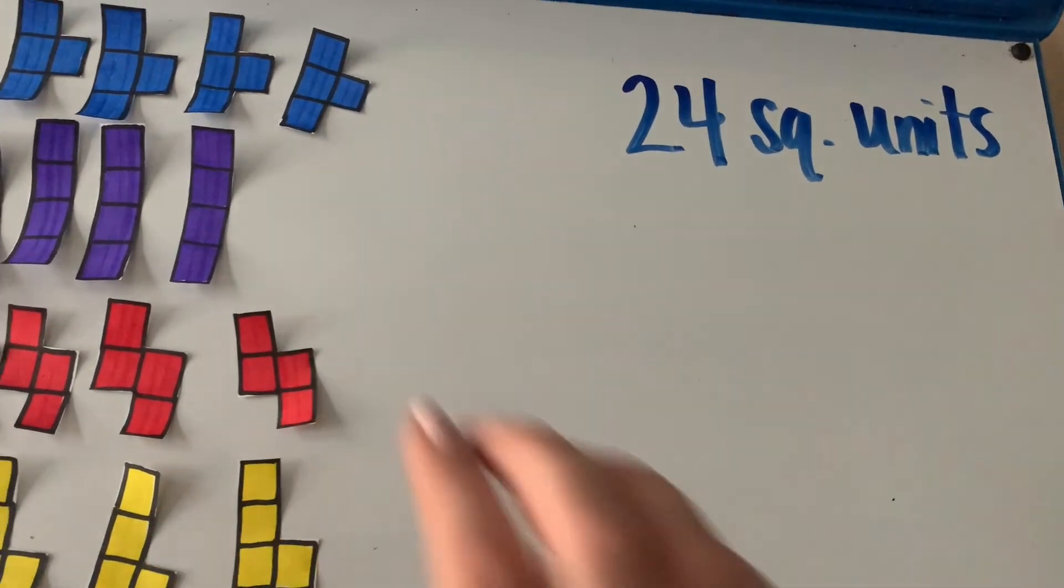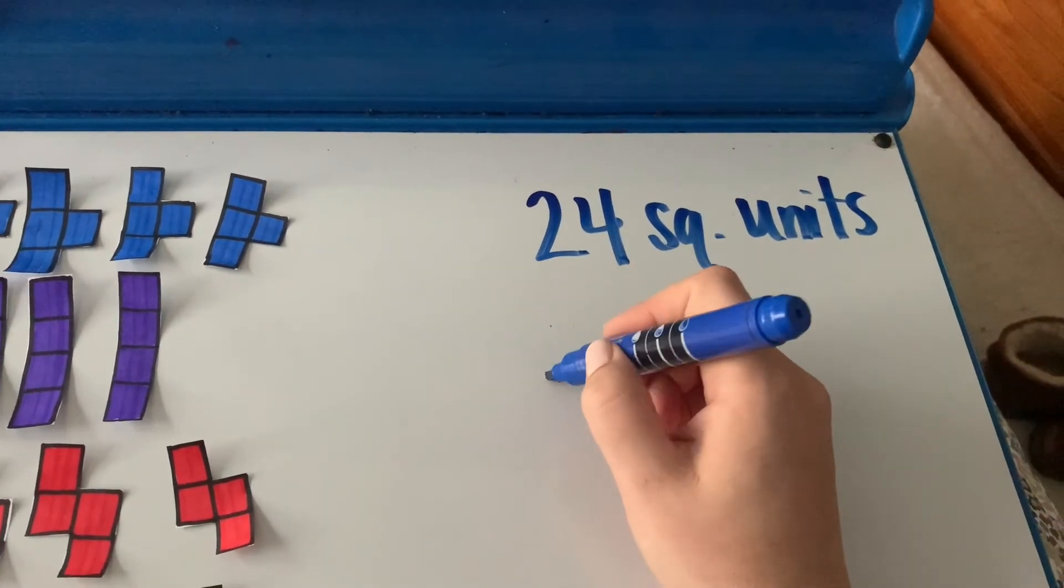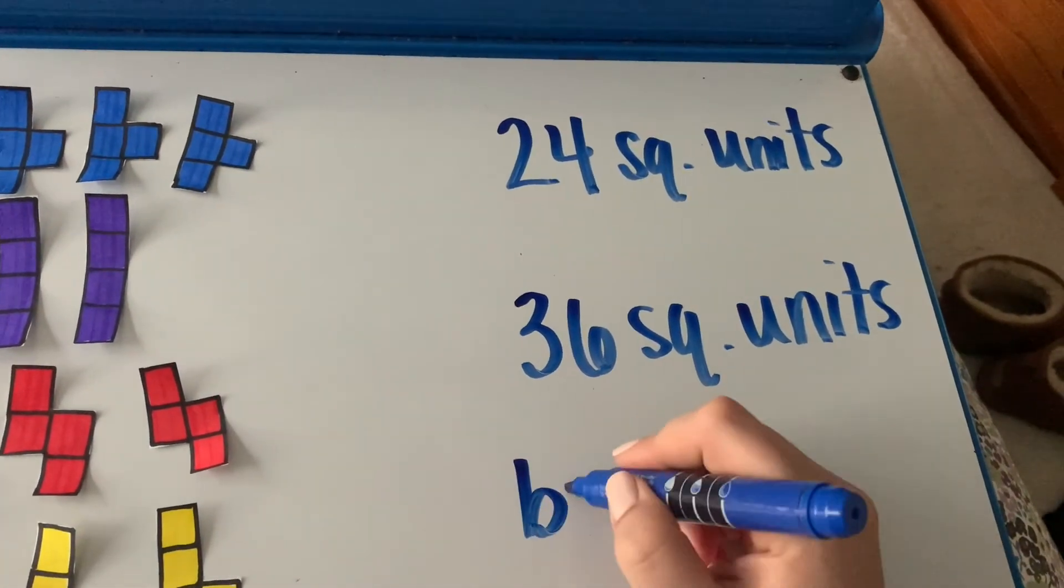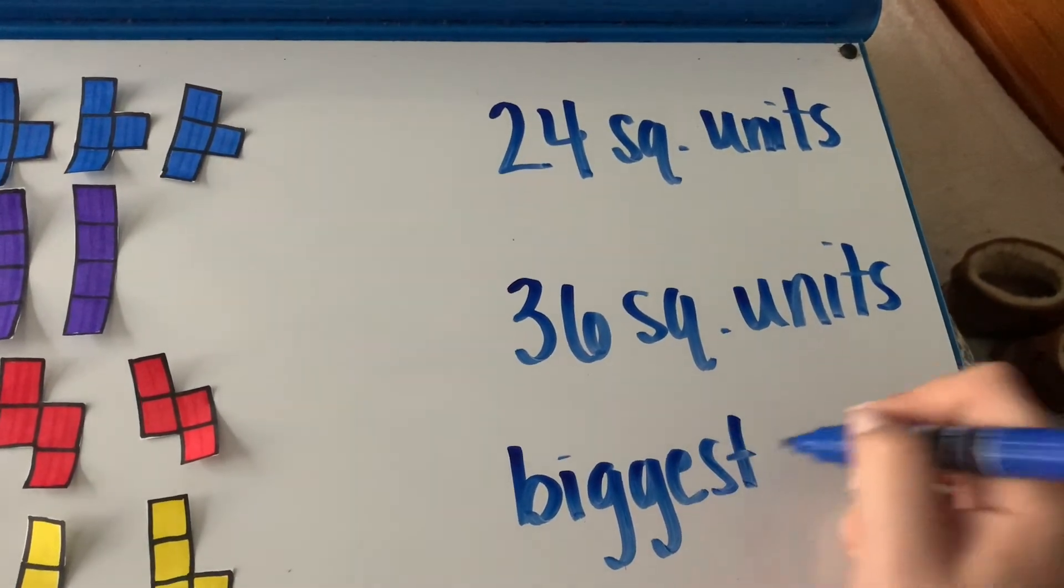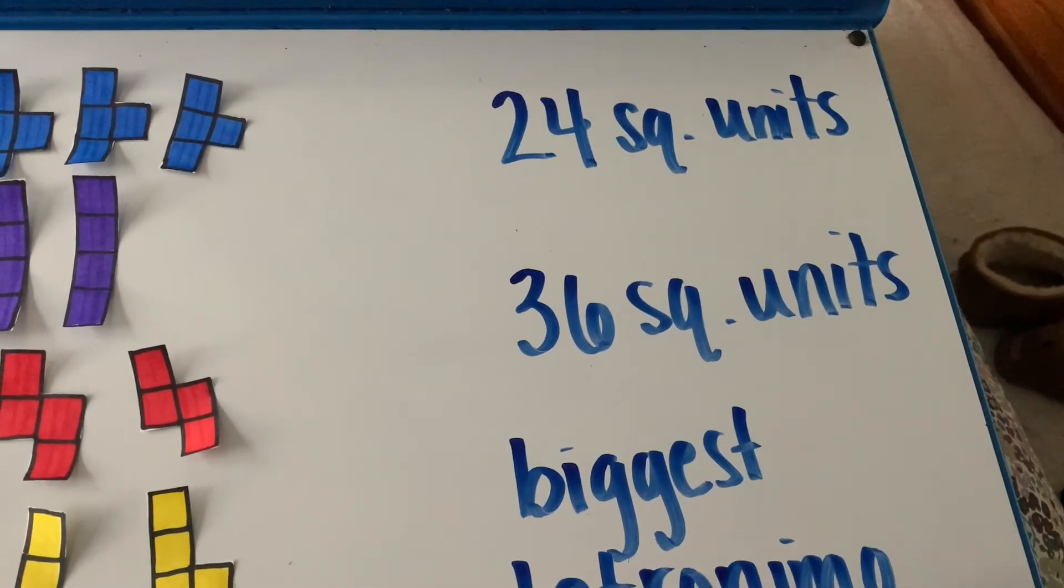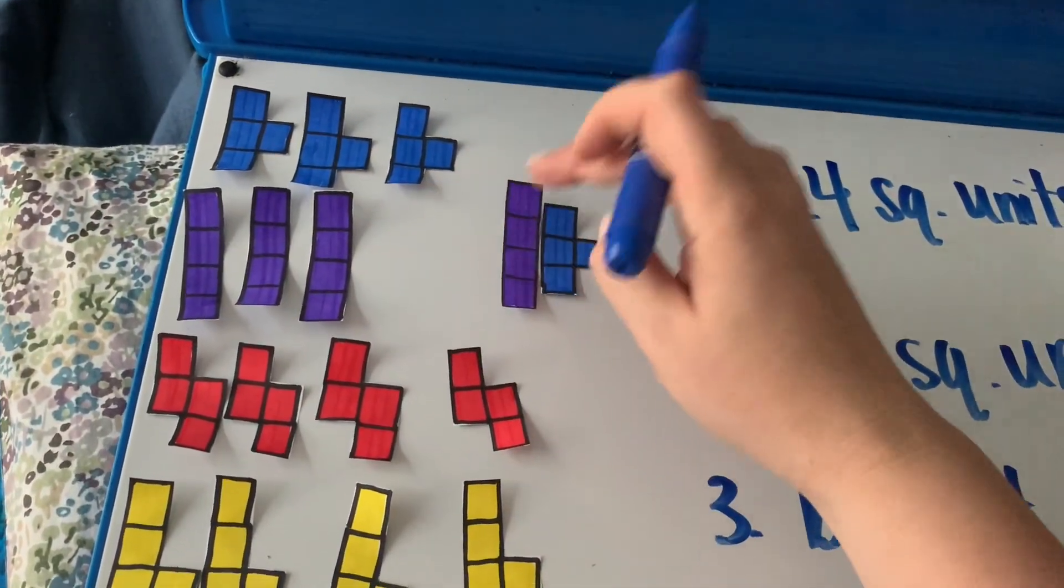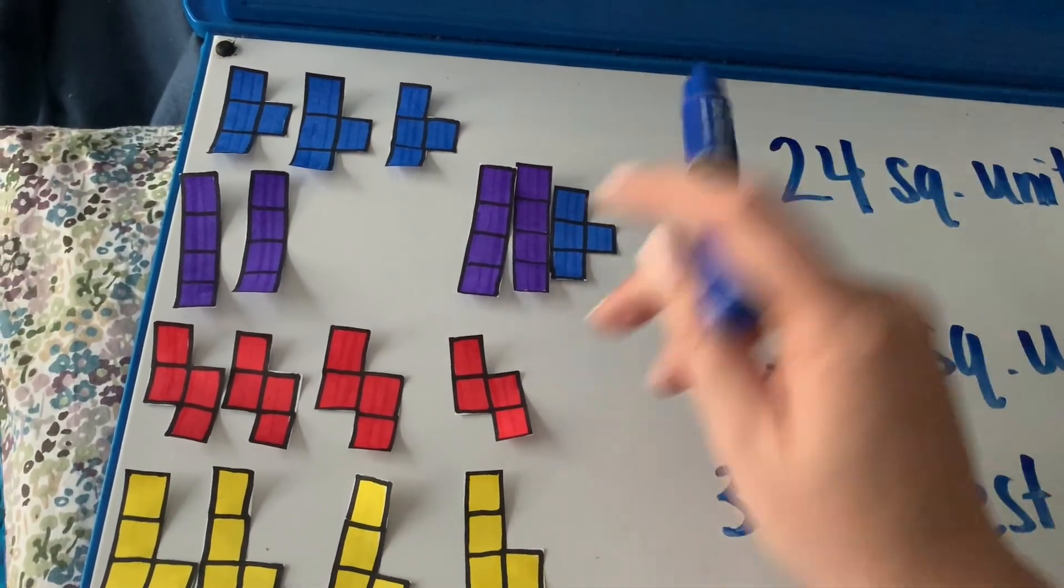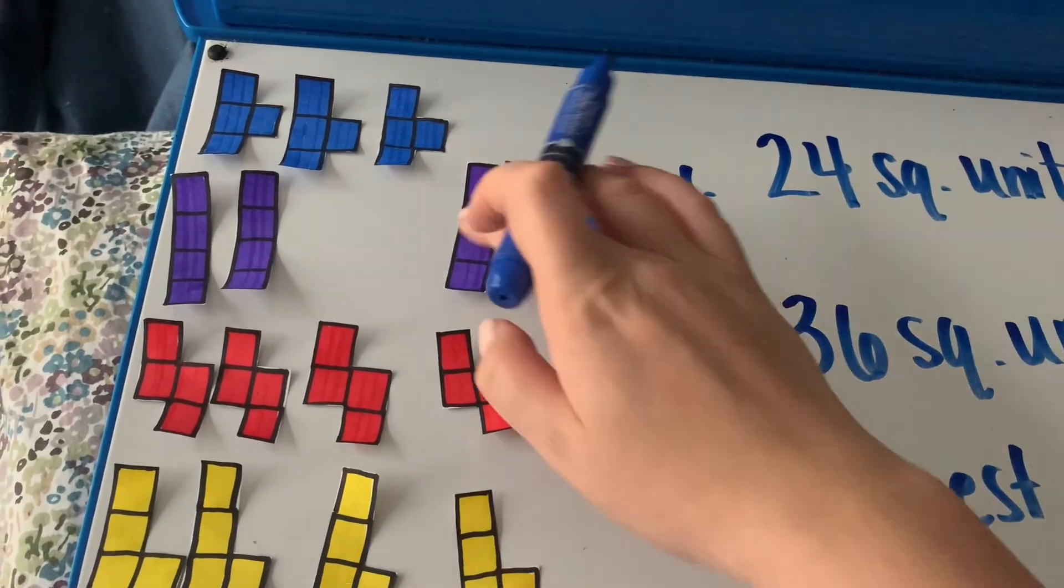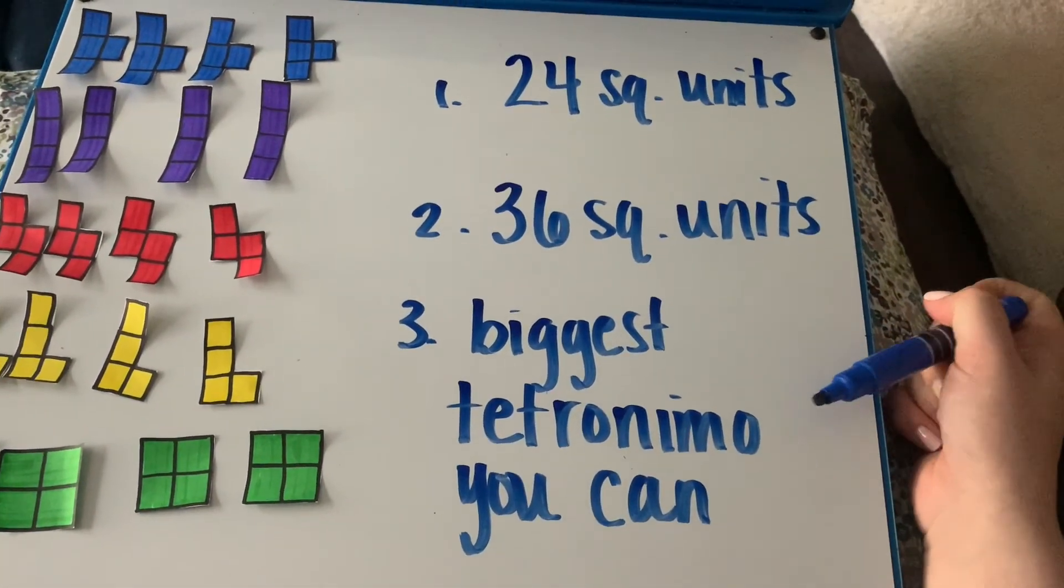Okay so you're going to pause the video and before you get on Zearn you're going to make some rectangles that have 24 square units and some rectangles that have 36 square units. Okay and then I want you to try to make the biggest tetromino you can. But remember you can't have any like out bumps. So like it couldn't be like you know this. You need to have something filling in that. It needs to be a perfect rectangle. All sides need to be completed. Okay so you're going to make one with 24 square units some with 36 square units and then the biggest tetromino you can. And I want you to take a picture and we're going to post the biggest or a couple of the biggest ones tomorrow before we start the lesson.